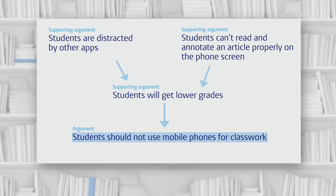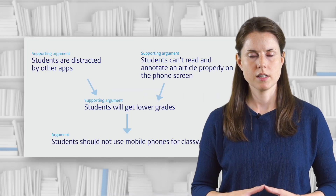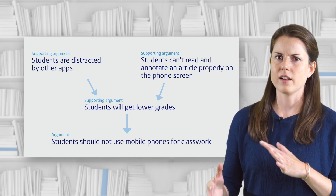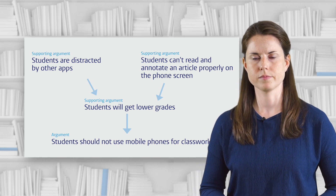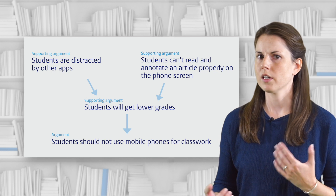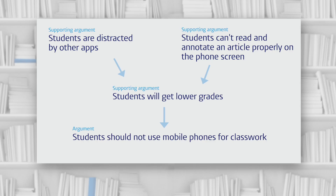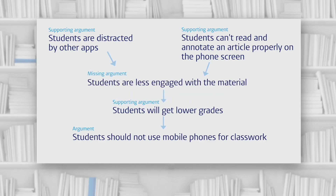Students are distracted by other apps; students can't read and annotate articles properly on the phone screen. But why do those things lead to lower grades? We haven't really made that link very clear. If students are distracted and can't read the material properly, I would say that they're less engaged with the material overall. When students are less engaged with the material, they aren't going to be able to achieve as high a grade in an exam or essay. So let's add that missing step in. Now I'm fairly happy with this flow of argumentation, and we can write this out in full sentences.